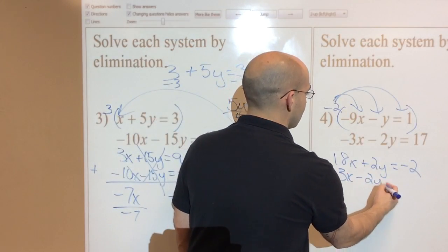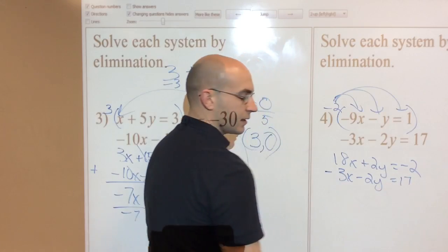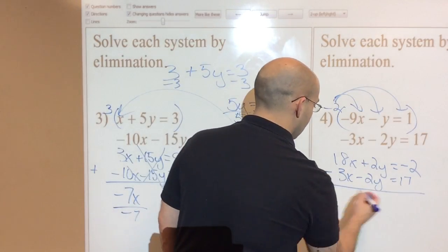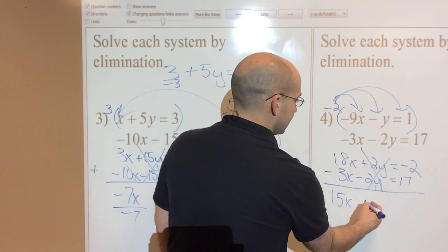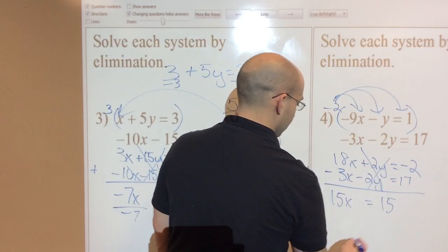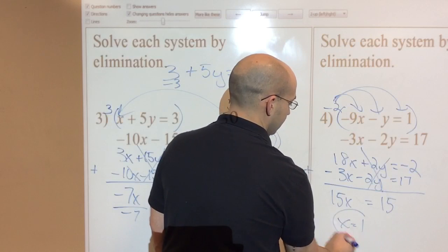Negative 3x minus 2y equals 17. I just rewrote that second equation down here. Now I know that my y values will eliminate. I'm adding down. 15x is going to equal 15. Pretty simple. So x is going to be 1.